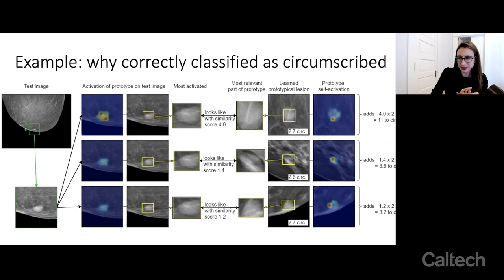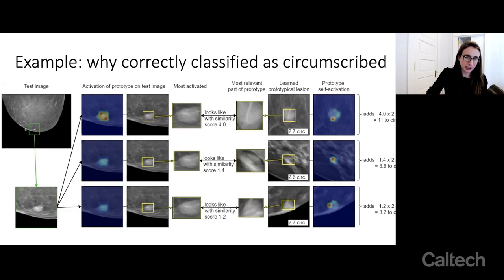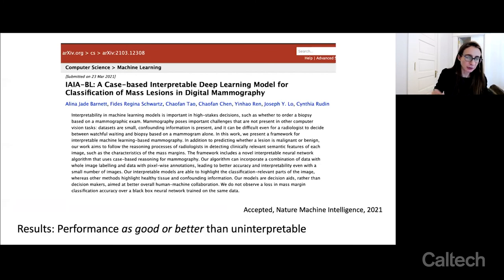This is not a black box with an explanation. If it's wrong, you know exactly what the points were for every comparison it made. If you're a radiologist and can actually read these images, you could troubleshoot it in real time. The main results from the paper are that the performance is as good or better than the uninterpretable models.